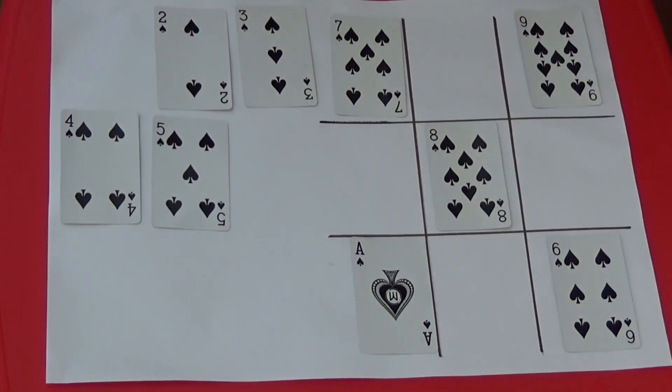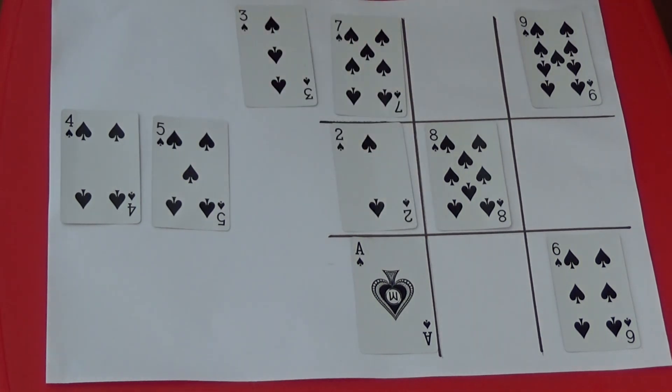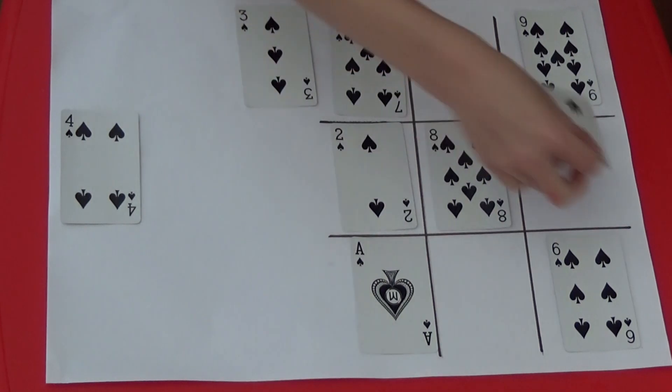If the other player puts 2 next to the 8, I can then put a 5 and score 15 across.